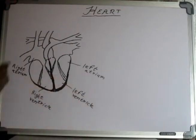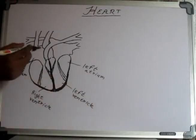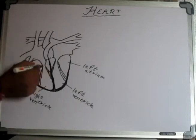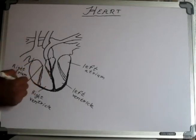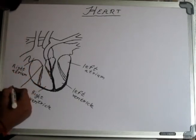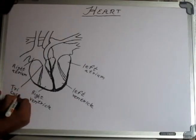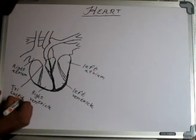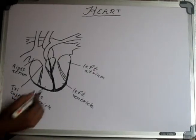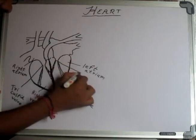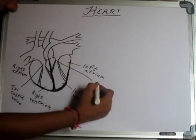Now let's talk about these walls. This wall is called the tricuspid wall, which separates the right atrium from the right ventricle. And this is called the bicuspid wall, which separates the left atrium from the left ventricle.